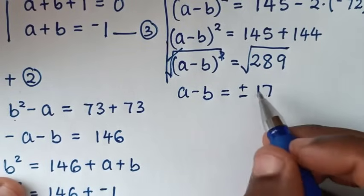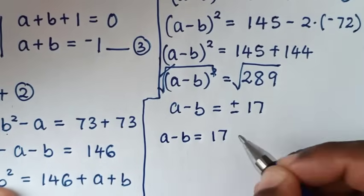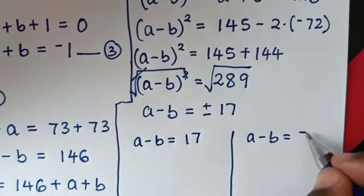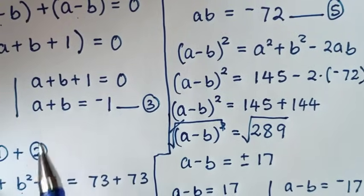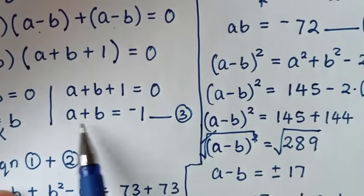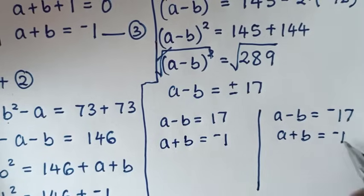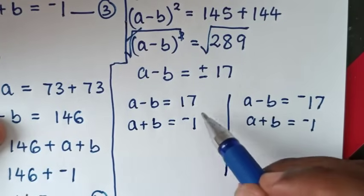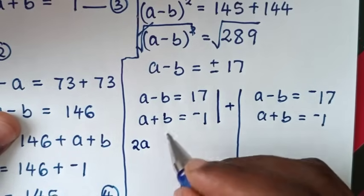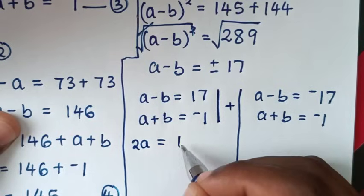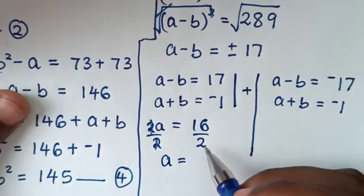We have two solutions because of plus or minus. From the first solution, a minus b equals positive 17. We compare this with equation 3, a plus b equals negative 1. Using elimination by adding these two equations: a plus a is 2a, negative b plus b is 0, equals 17 plus negative 1, which is 16. Dividing both sides by 2, a equals 16 divided by 2, which is 8.